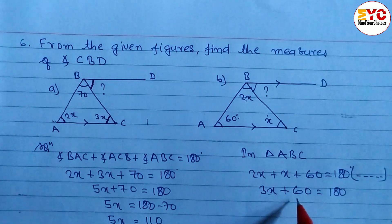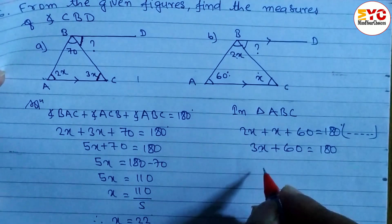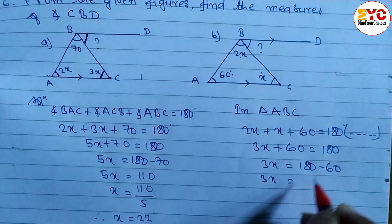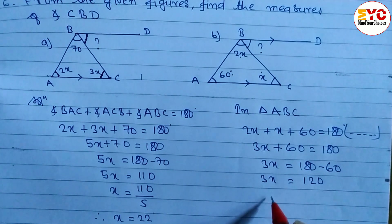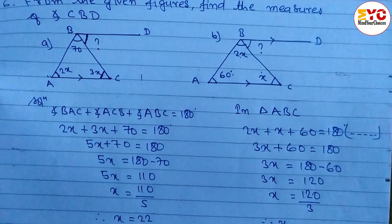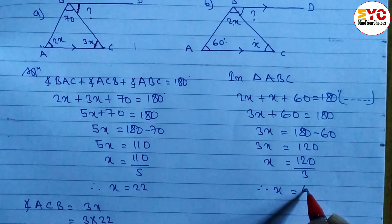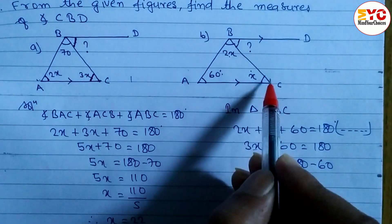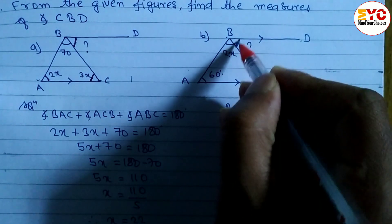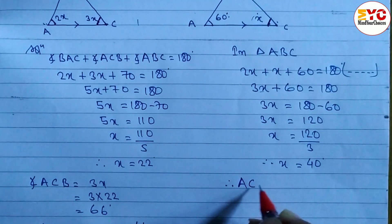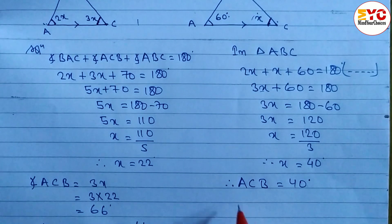These two are unlike terms so we take 60 to the right side. So 3x is equal to 180 minus 60, giving 3x is equal to 120 degrees. Therefore x is equal to 120 divided by 3, so x is equal to 40 degrees. Now to find out angle CBD, we find angle ACB because these two are alternate angles. Therefore angle ACB is equal to 40 degrees.